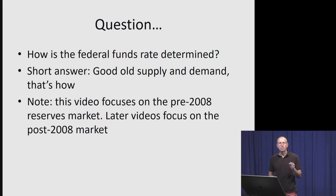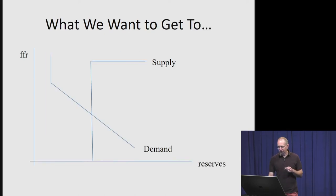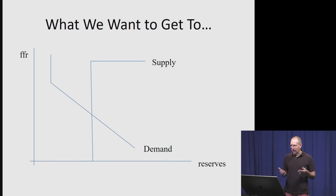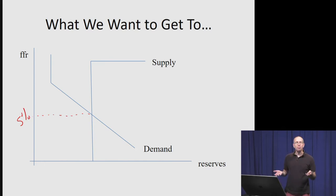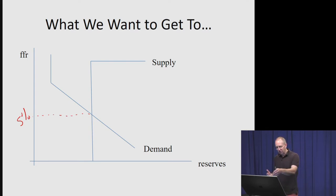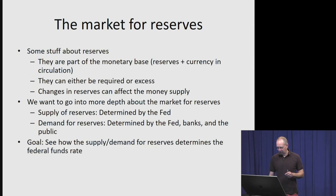In future videos, we'll talk about the post-2008 market. What we want to get to is this picture here. At the end of the day, we'll have nothing more than a standard supply and demand analysis, where we'll see that the equilibrium federal funds rate is — with my example numbers here — 5%. We'll derive where this interesting-looking demand curve and supply curve come from.